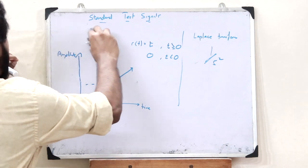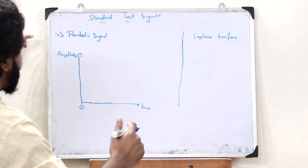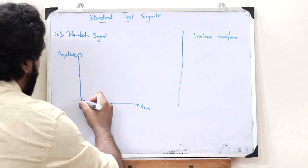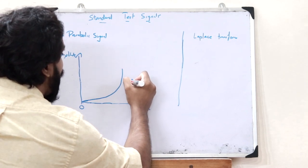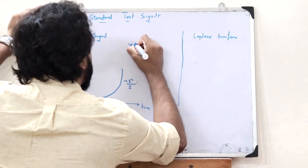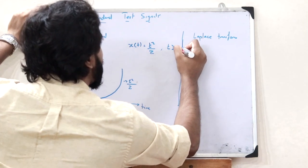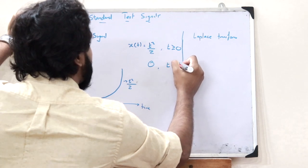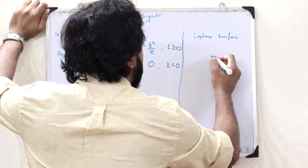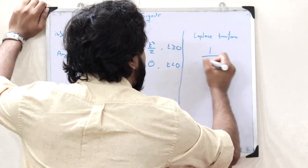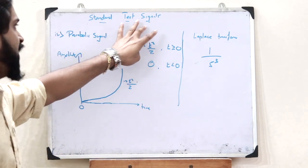Lastly, we have the parabolic test signal. A parabolic test signal would look like a parabola — its amplitude varies as t squared divided by 2. A parabolic signal can be represented as x(t) equals t squared divided by 2 if t is greater than or equal to 0, and x(t) equals 0 if t is less than 0. In the Laplace domain, this signal is represented as 1 divided by s cubed.